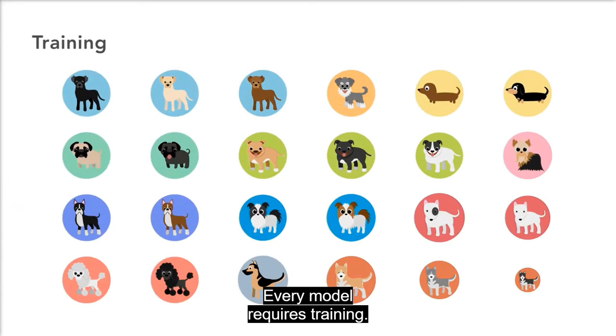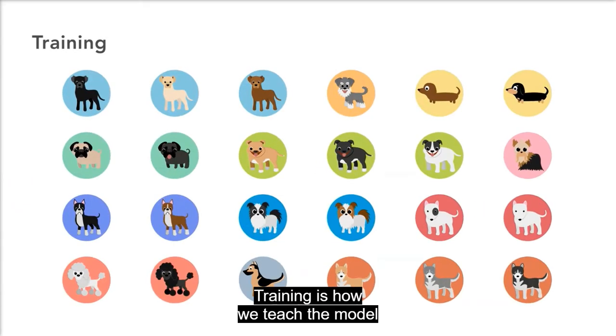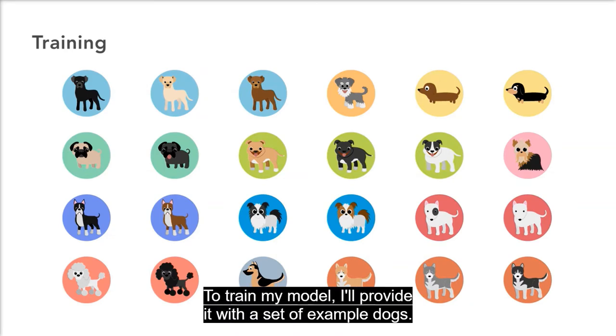Every model requires training. Training is how we teach the model to predict by providing it with examples. To train my model, I'll provide it with a set of example dogs.